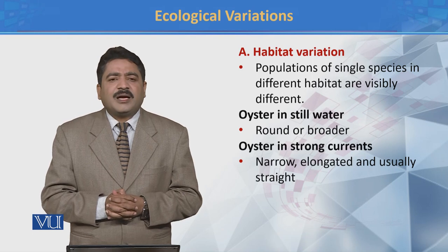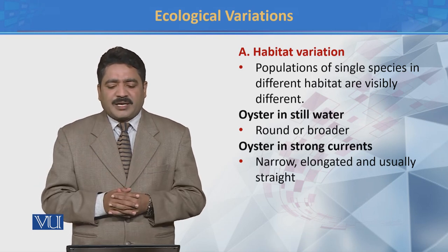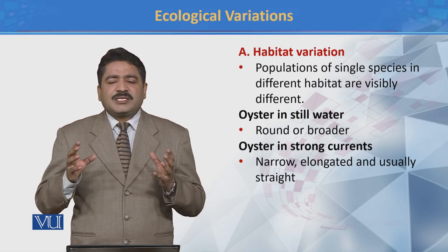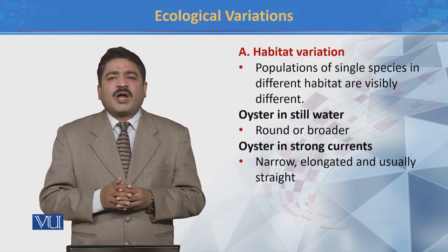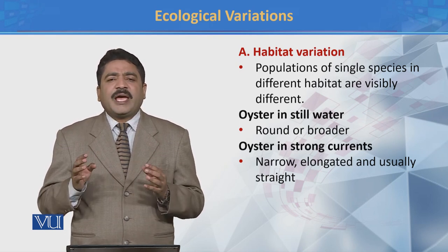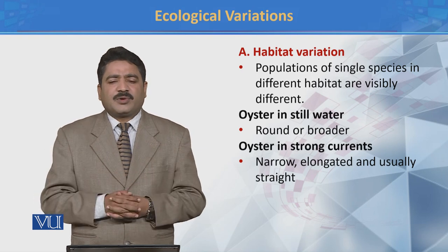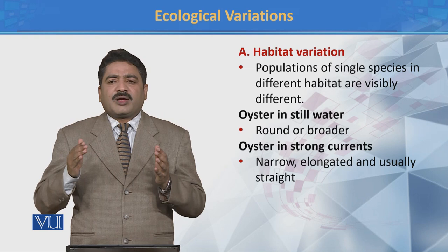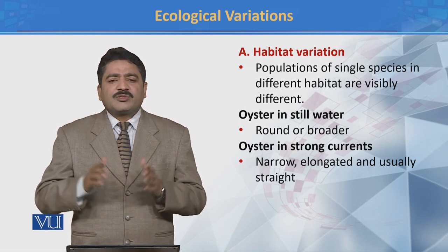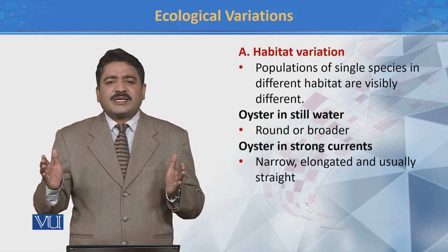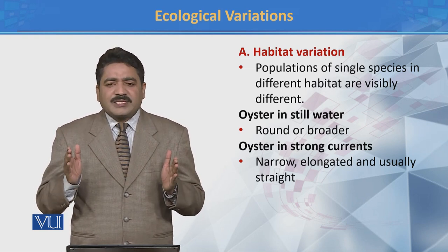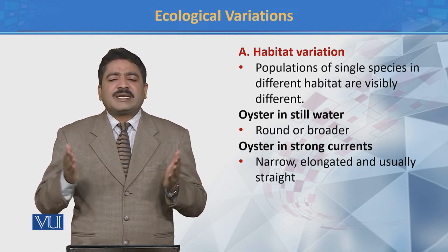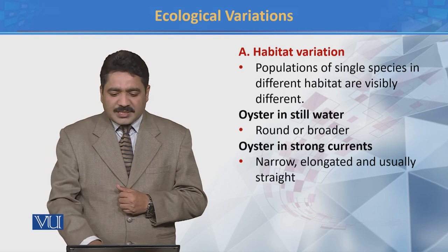Agar hum oyster ki baat karein to oyster still water ke andar iski jo shape hai wo round hoti hai aur yeh broader hote hain. Lekin agar inhi oyster ko strong current ke andar maujood hain to strong water current ki wajah se yeh narrow, elongated aur aam tor par straight hote hain.